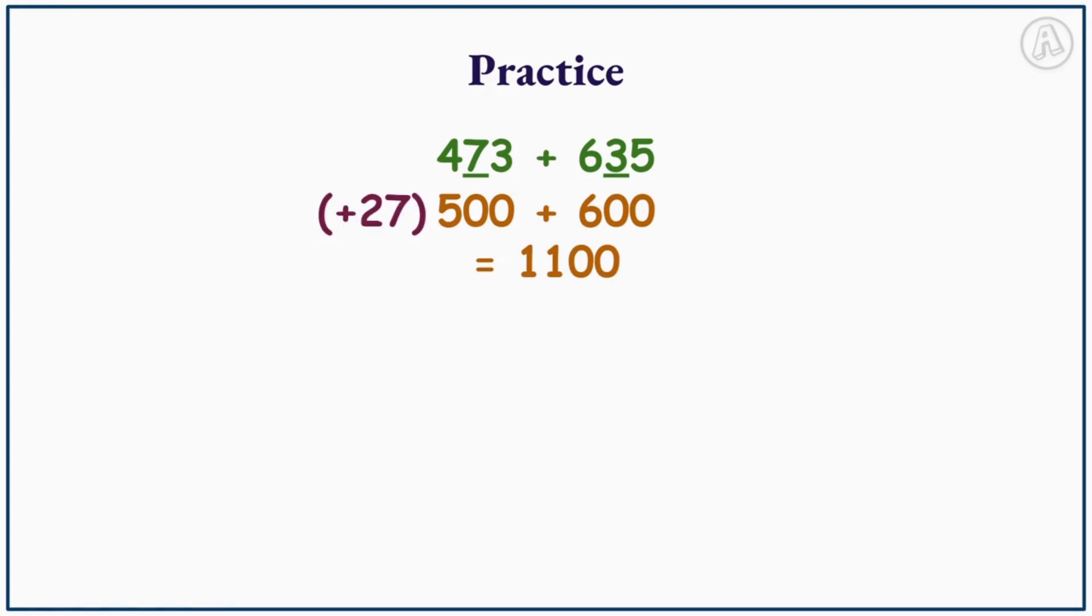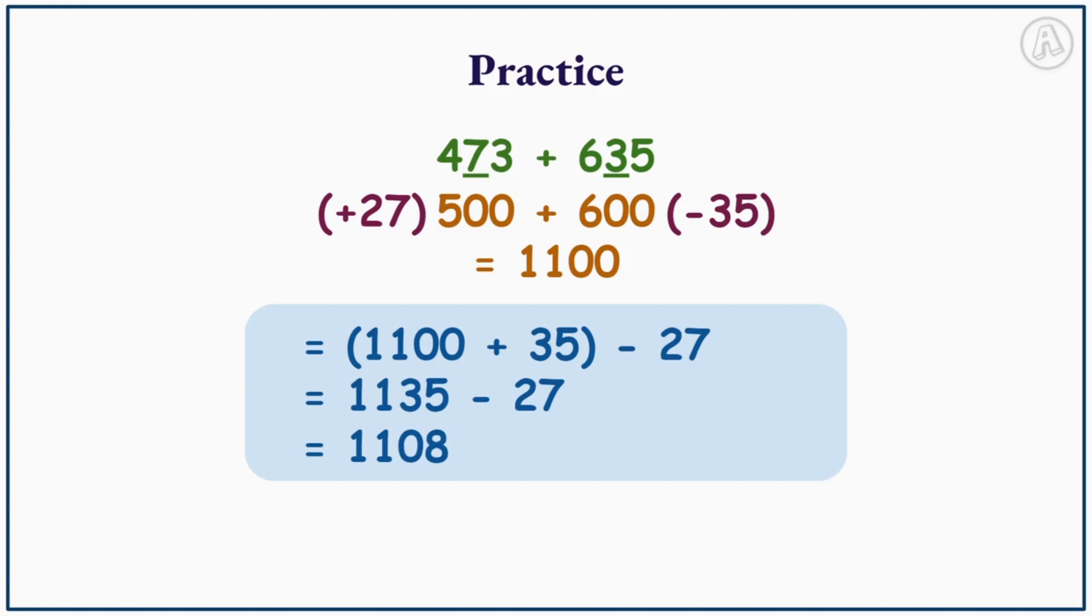Note we add 27 to 473 to get 500, and we subtract 35 from 635 to get 600. So let's use our total errors to correct our answer. Since we added 27, we now need to subtract 27. And since we subtracted 35, we now need to add 35. So 1,100 plus 35 equals 1,135 minus 27 equals 1,108. So by compensating our estimated answer, we were able to calculate our actual answer. So 473 plus 635 equals 1,108.